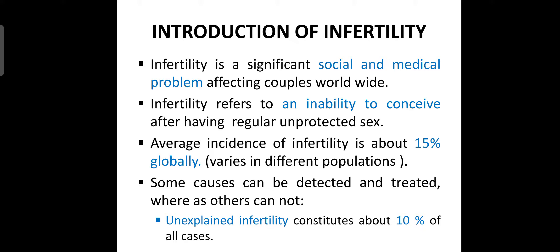Starting with the introduction: infertility is a significant local and medical problem affecting couples worldwide. Infertility refers to an inability to conceive after having regular unprotected sex — even after having regular intercourse without any contraceptive, they will not get pregnant. The average incidence of infertility is about 15% globally. Some causes can be detected and treated, whereas others cannot. Unexplained infertility constitutes about 10% of all cases.